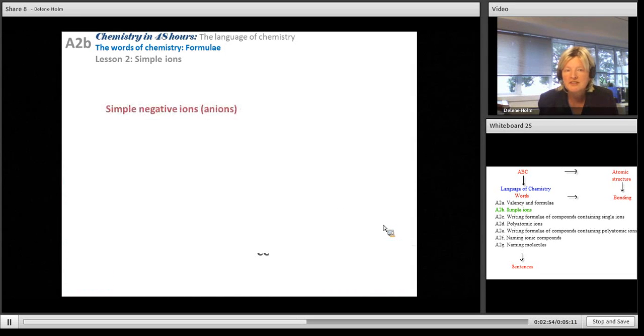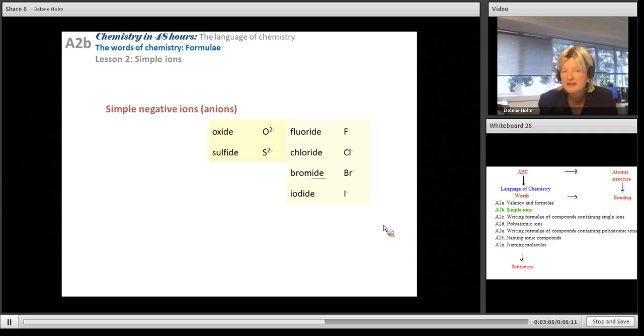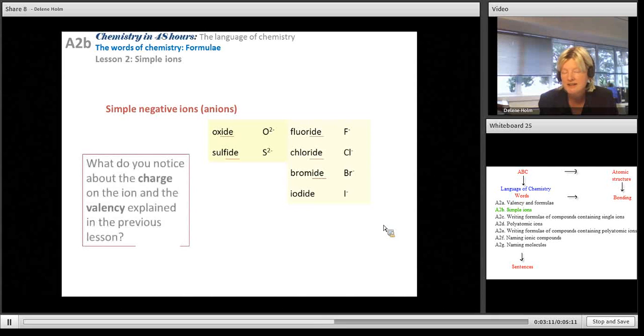So what are the simple negative ions? We have those in group 16 and those in group 17. And notice the change in name before an anion. It changes to IDE. So fluorine becomes fluoride and so on. And I hope you notice the relationship with the valency.